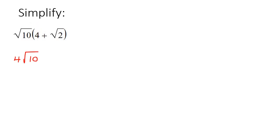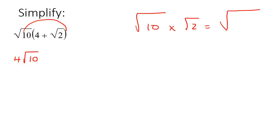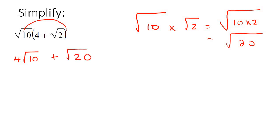Now, when you multiply two square roots together, what you do is you just make one square root and then you just multiply the two numbers together inside the square root. So that would be square root of 20.